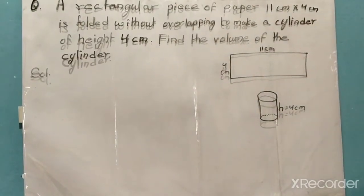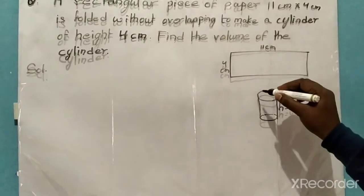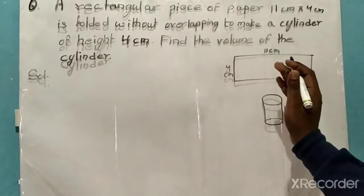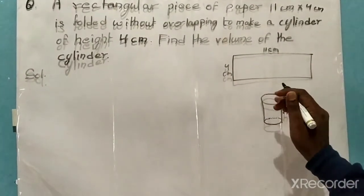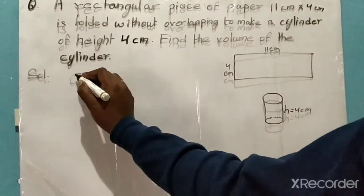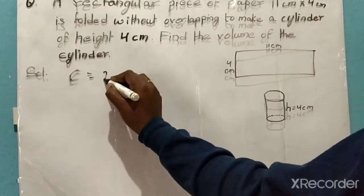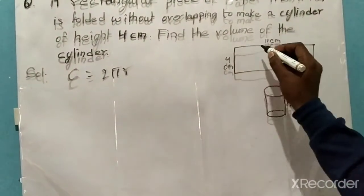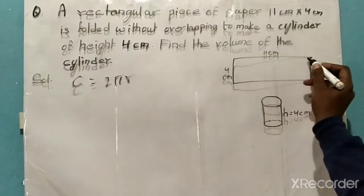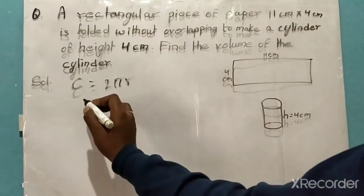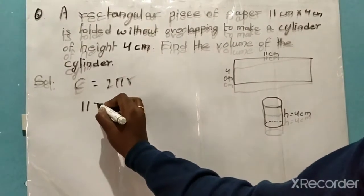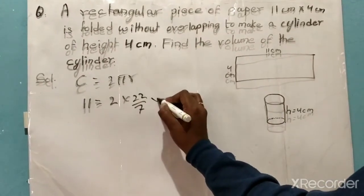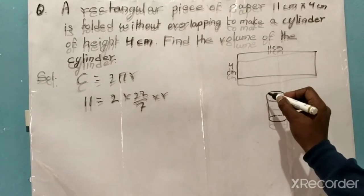When we fold the paper we get a cylindrical shape, and we have to find the volume. We know the circumference of a circle: circumference C is equal to 2πr. Here it is given that the circumference is 11 centimeter. When we fold the paper, the length becomes the circumference, so 11 is equal to 2πr, where π is 22/7.